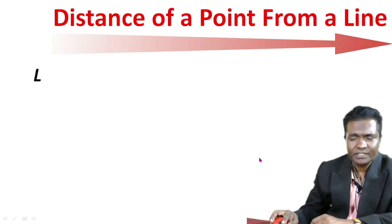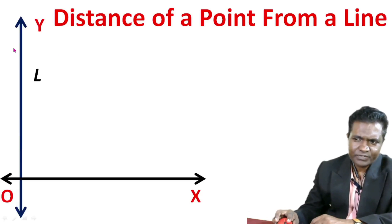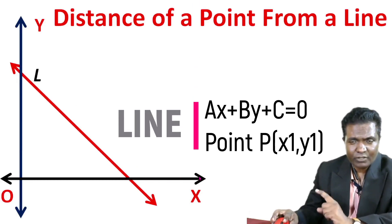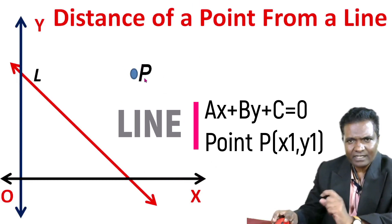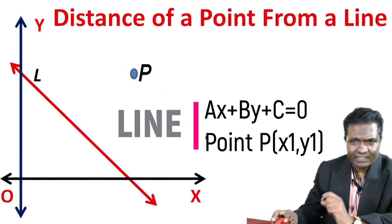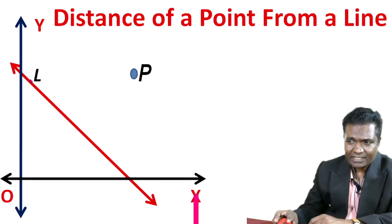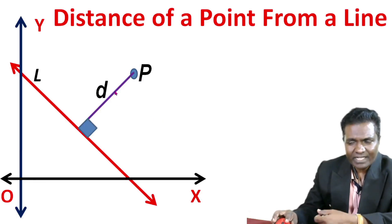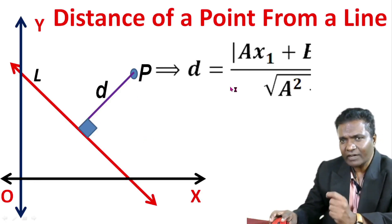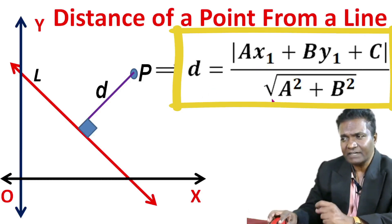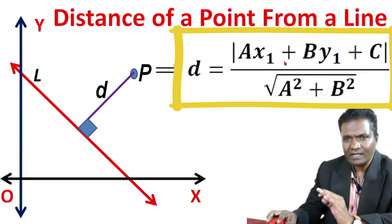What is the distance of a point from a line? Suppose there is one line L whose equation is ax plus by plus c equal to 0. The point is P with coordinates x1, y1. The perpendicular distance D is the length we need to find out using the formula.